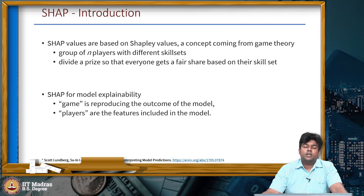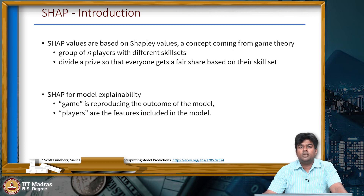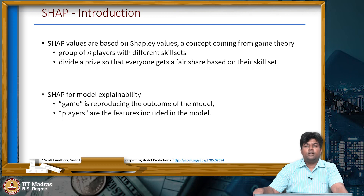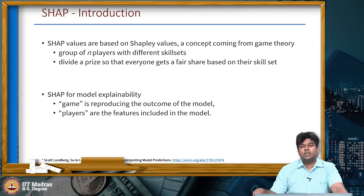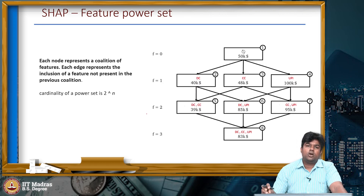Now let us move on to the SHAP framework, one of the most widely used XAI frameworks. SHAP comes from the game theory concept of Shapley values. Consider a game where there are n different players with different skill sets playing together to win a prize. Once they win, the prize must be distributed among the players with an equal and fair share. We use the same concept of fair share division — Shapley values — to interpret and explain a model. Here, the game is the outcome of the model and the players are the essential features that go into predicting the model's outcome.